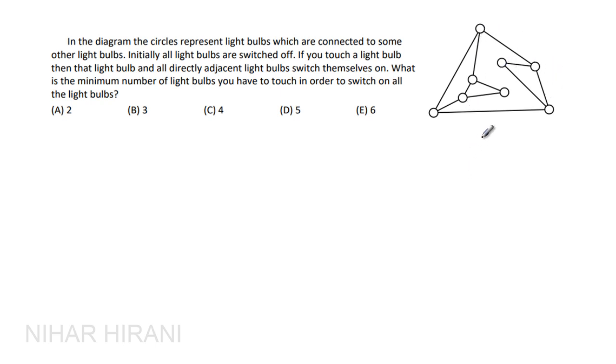Now the question says if you turn on any one bulb, let's say this one, then it will automatically turn on bulbs connected to this one. Which are the bulbs connected to this one?